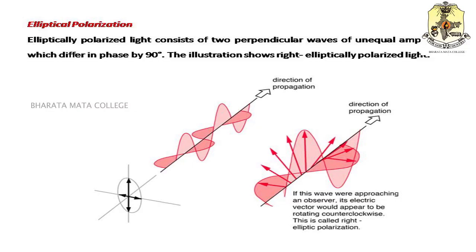For elliptically polarized light, it is composed of two electromagnetic radiations whose amplitudes are different, differing by a phase of 90 degrees. Two unequal amplitude electromagnetic radiations that are orthogonal are passed through a Nicol prism to produce plane polarized light, which is then allowed to fall on a quarter wave plate. When the plane polarized light falls on the quarter wave plate at angles other than 0, 45, and 90 degrees, we obtain elliptically polarized light.